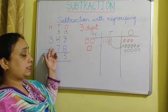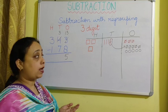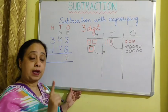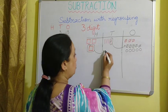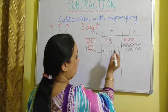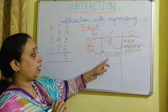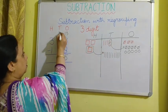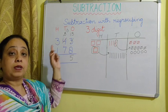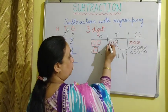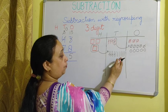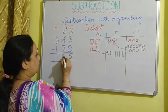Now I have to take away 7 tens from 3 tens, but I can't do that. So I borrow 100 from the hundreds column. I know that 100 equals 10 tens, so I get 10 more lines. Now instead of 3 tens, we have 13 tens. I take away 7 from 13 tens, and 6 tens remain. So I write 6.